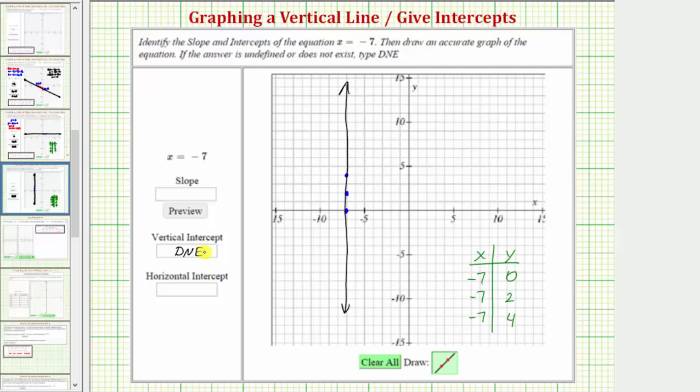The horizontal intercept is this point here, which would be negative seven comma zero. So in parentheses we enter negative seven comma zero. And now for the slope.